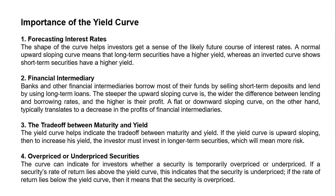The last importance is identifying overpriced or underpriced securities. The yield curve can indicate whether a security is temporarily overpriced or underpriced. If the security's rate of return lies above the yield curve, it is underpriced. If it lies below the yield curve, it is overpriced. If a security is overpriced, you can assume the price will fall, so you would not buy it. If a security is underpriced, it is likely to rise to its normal or accurate price, presenting a profit opportunity.